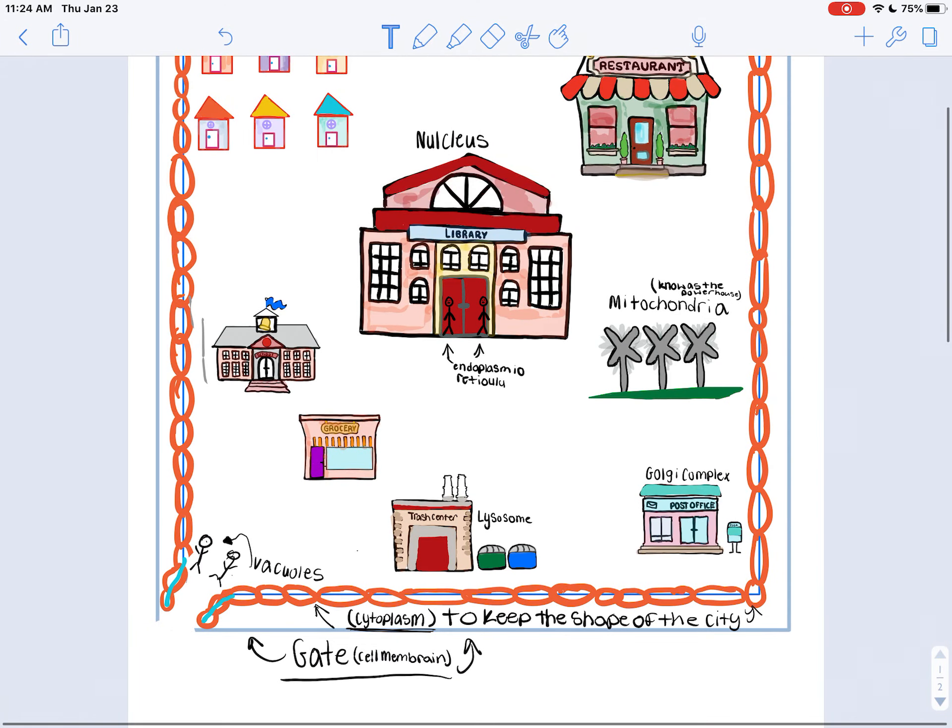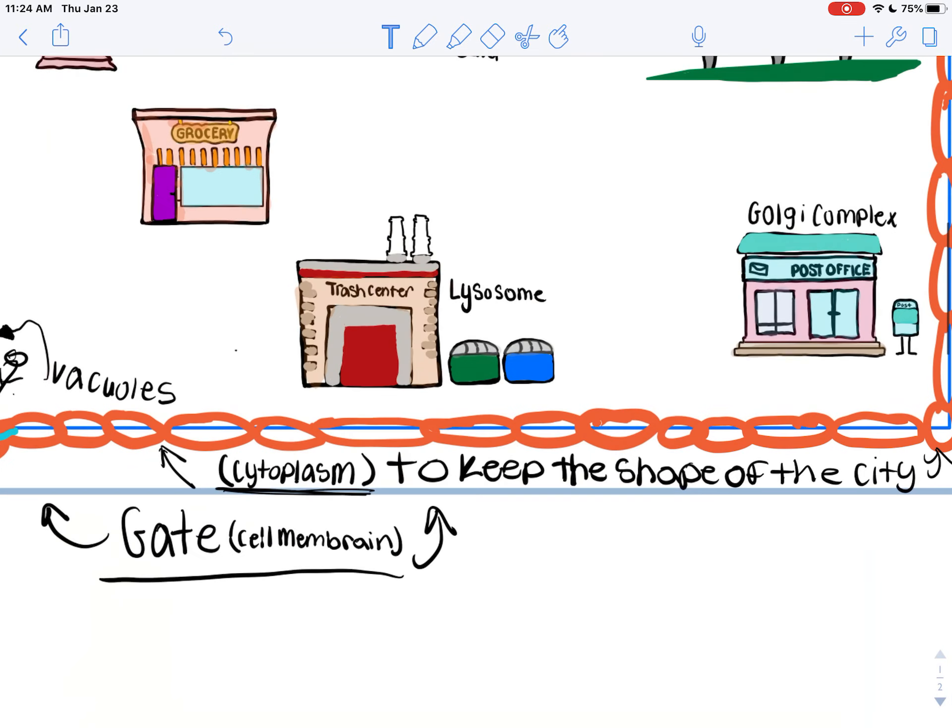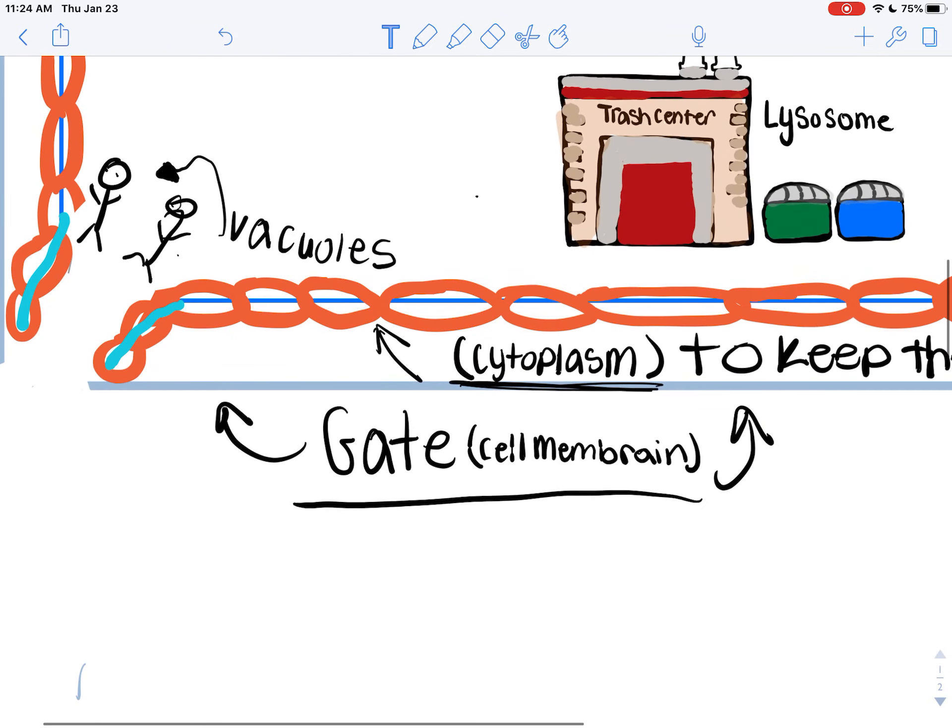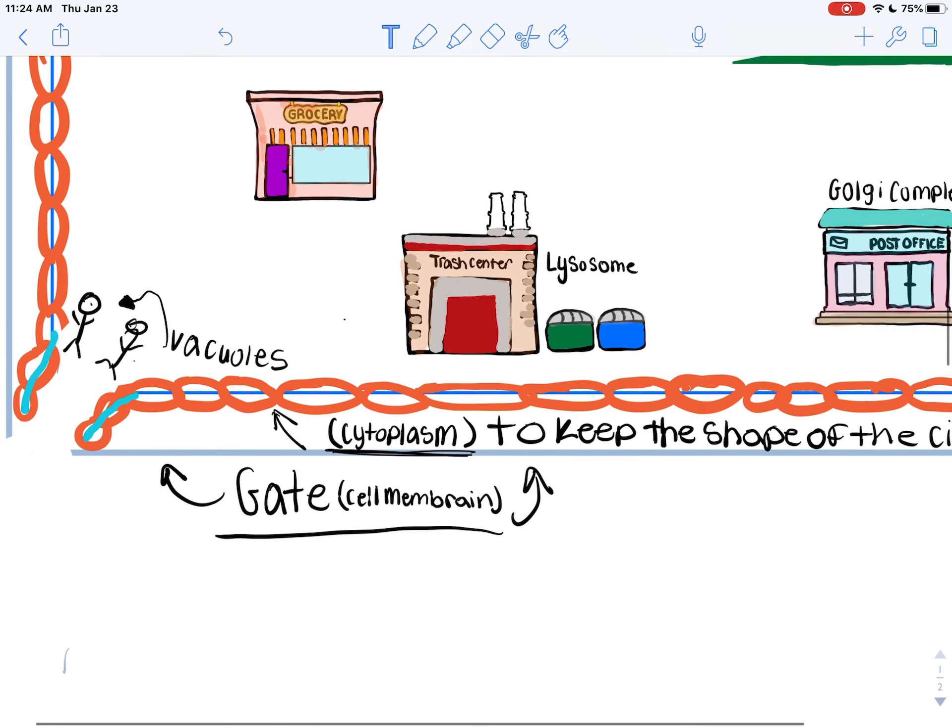Today we are going to be talking about the animal cell and how it functions. The first thing we have is the gate, which is known as the cell membrane. This is the light blue square that's over the whole entire city.